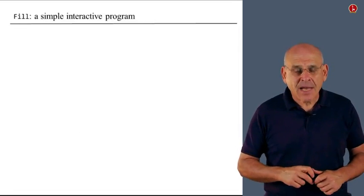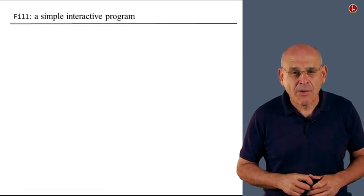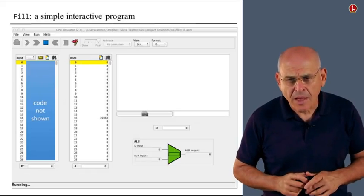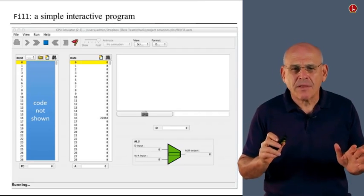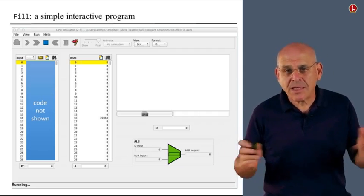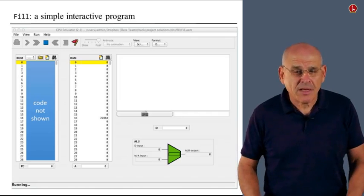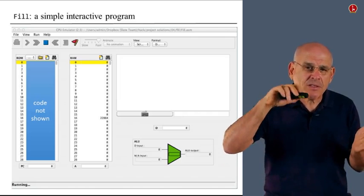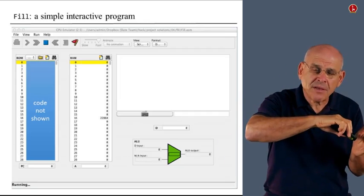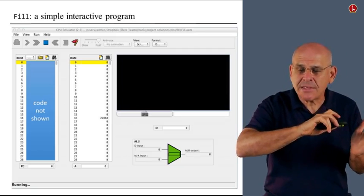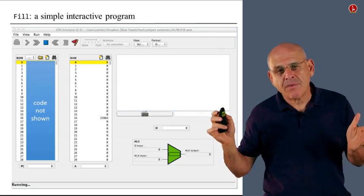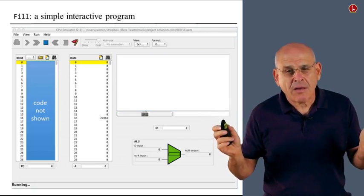This is the first assignment. And the second assignment is to write a simple interactive program that performs the following operation. This program listens to the keyboard. And as long as the user does nothing with the keyboard, nothing happens. But once the user touches a key on the keyboard, any key, once you touch a key, look what happens, the program blackens the screen completely.